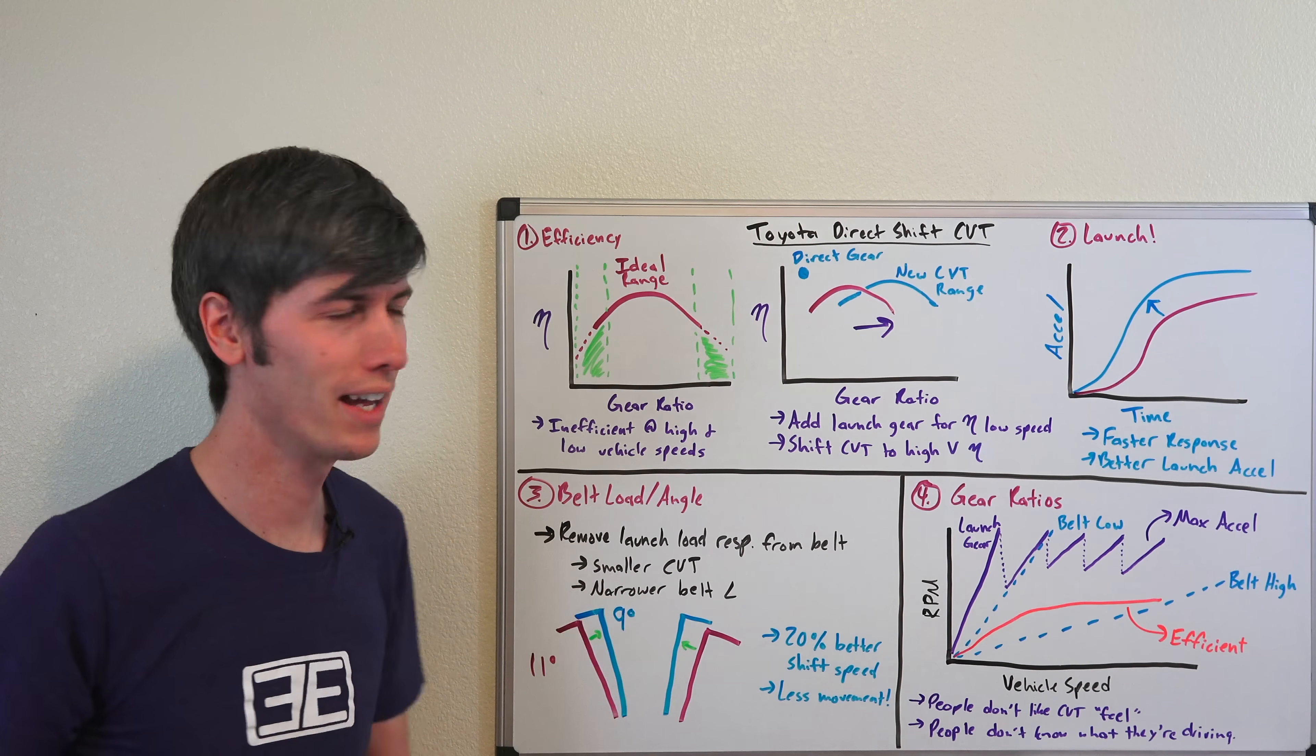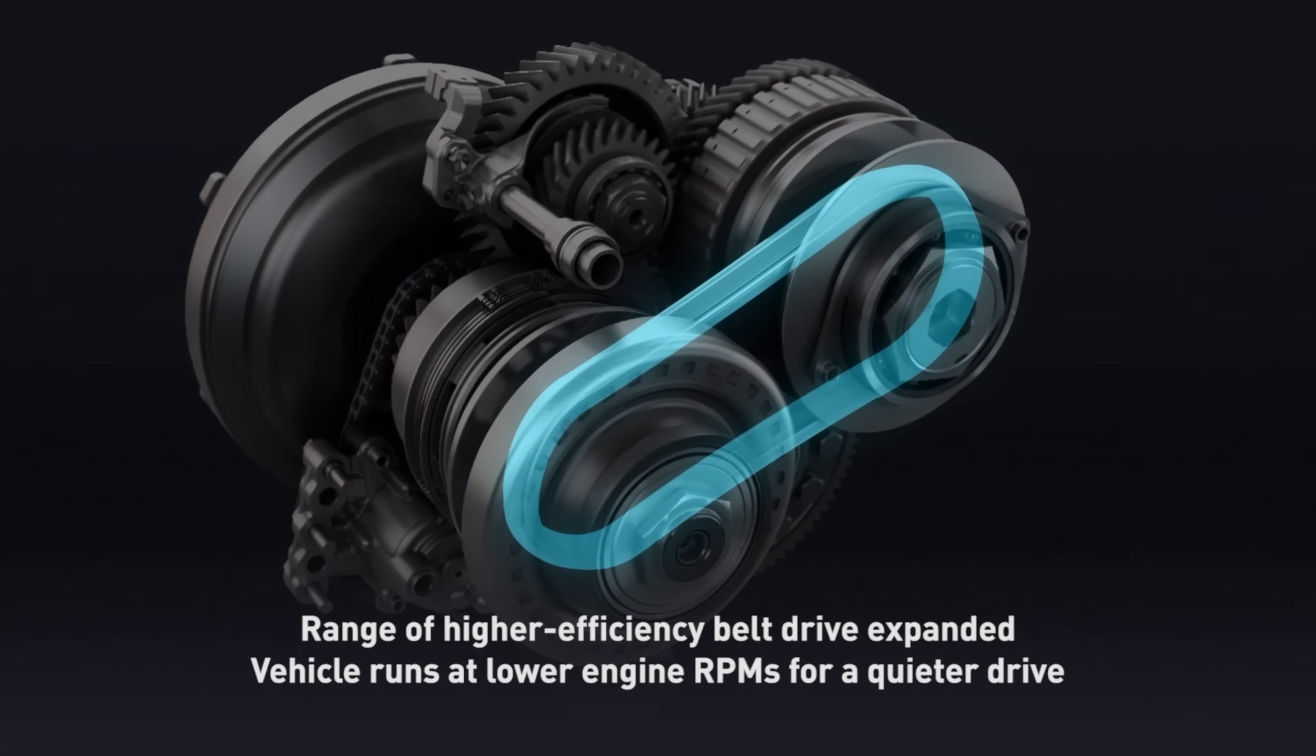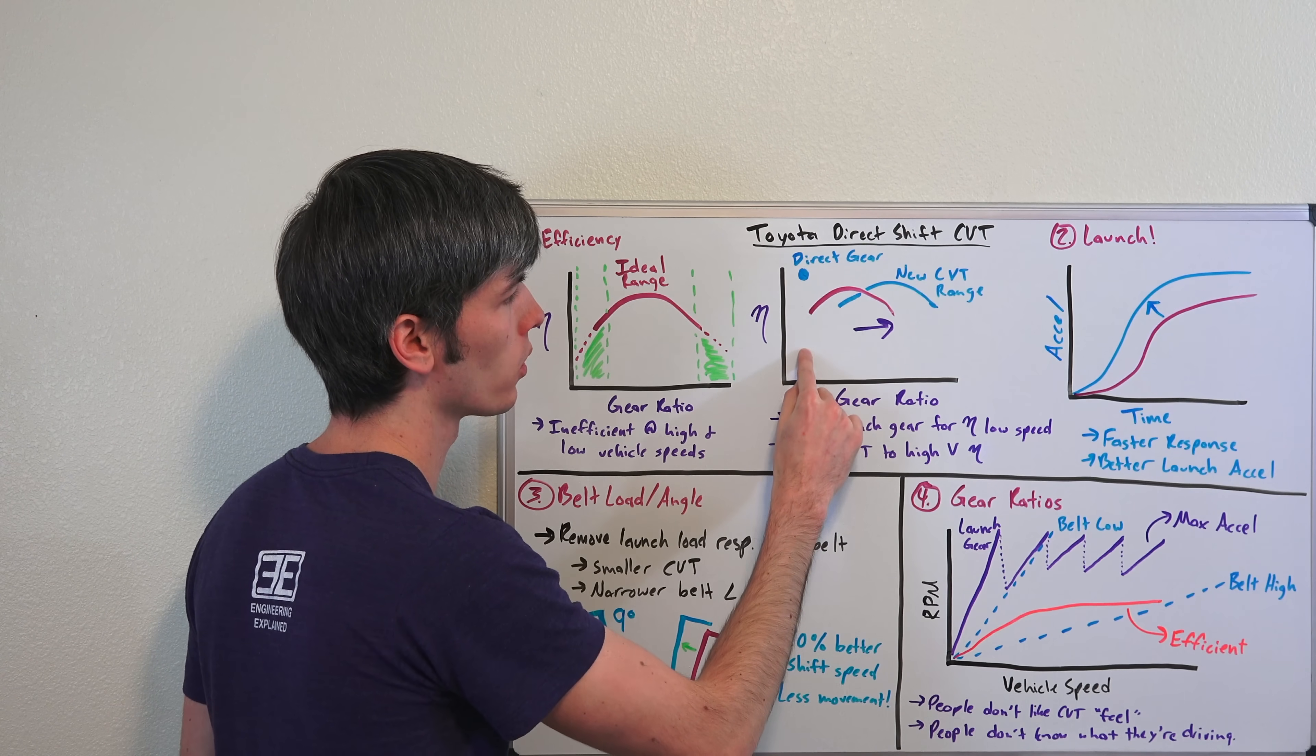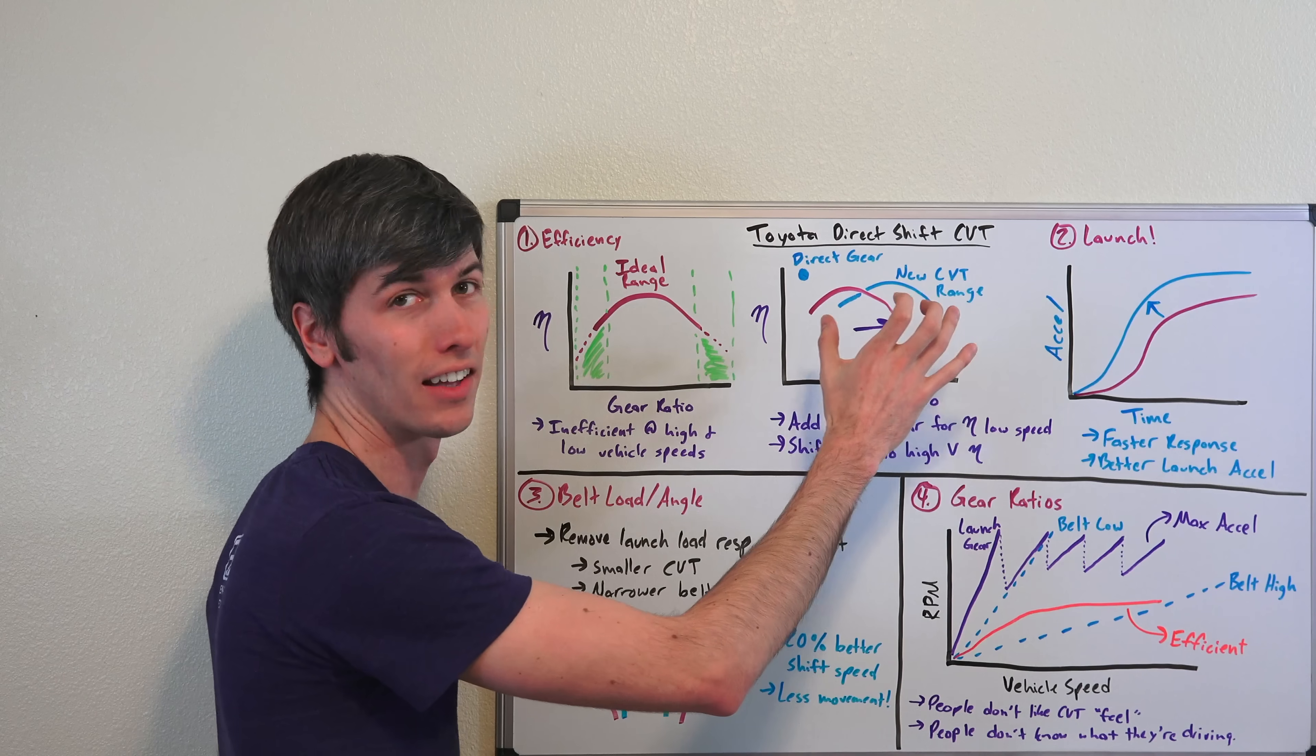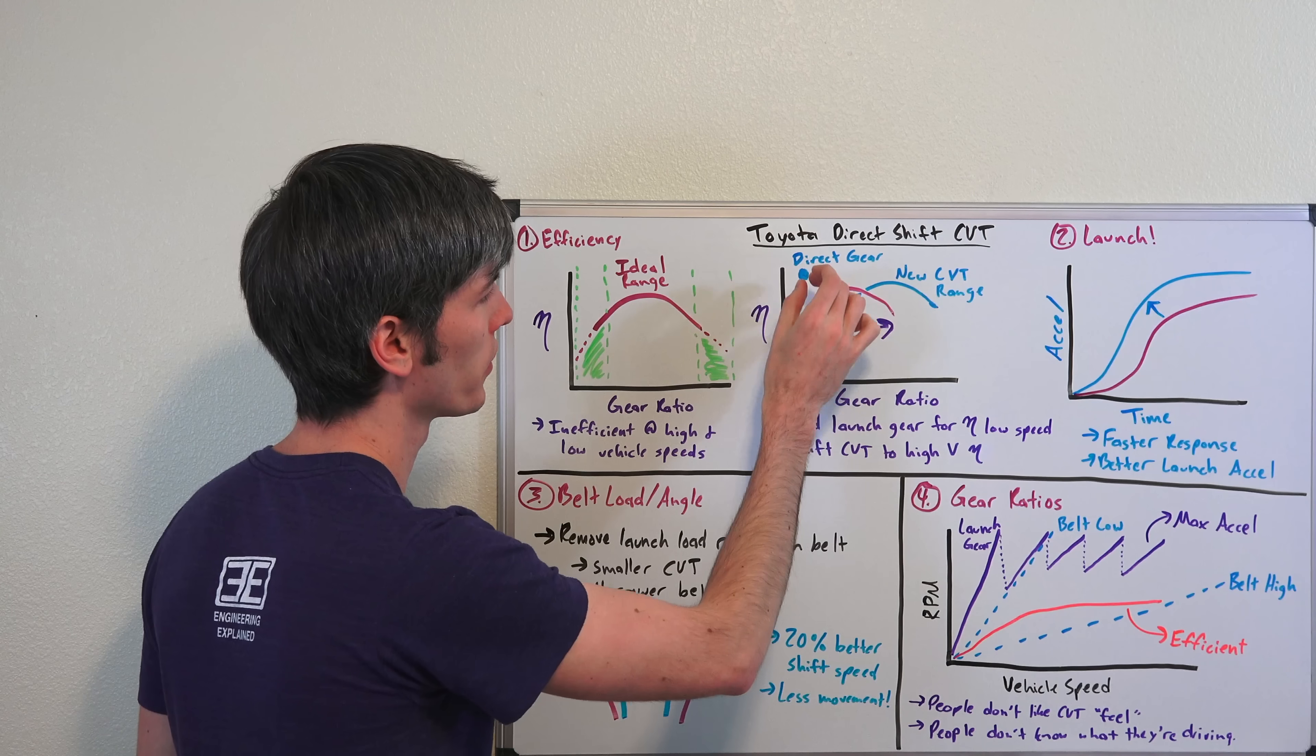Well inefficient is bad, and especially when you are Toyota, so they made an adjustment for this. Instead of previously where they had to have a CVT range that accommodated high gear ratios with low vehicle speeds and high vehicle speeds with low gear ratios, they instead shift the CVT to operate in a range for higher vehicle speeds and lower gear ratios, and allow a direct gear to take care of those high gear ratio scenarios where you're accelerating from a stop.